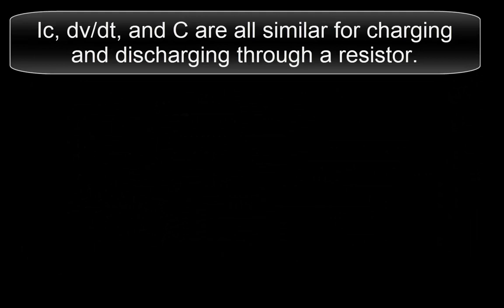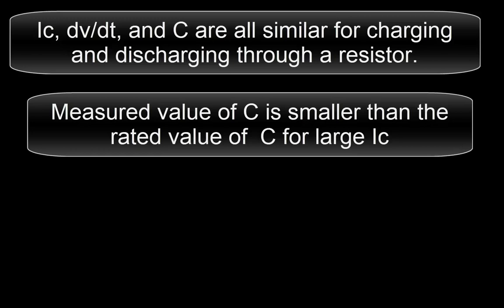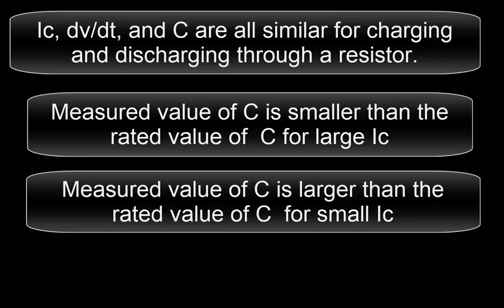IC, DVDT and C are all similar for charging and discharging through a resistor. Measured value of C is smaller than the rated value of C for large IC.